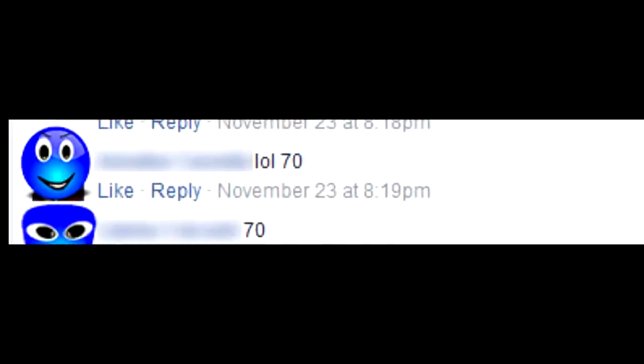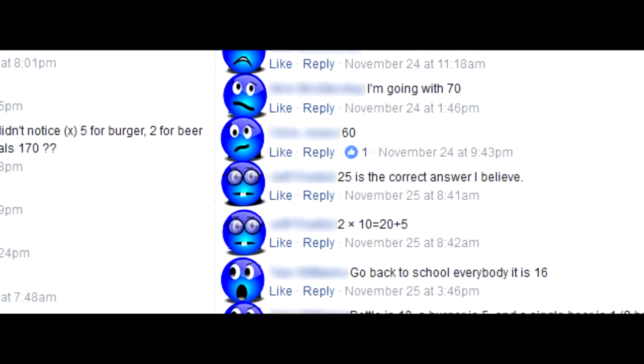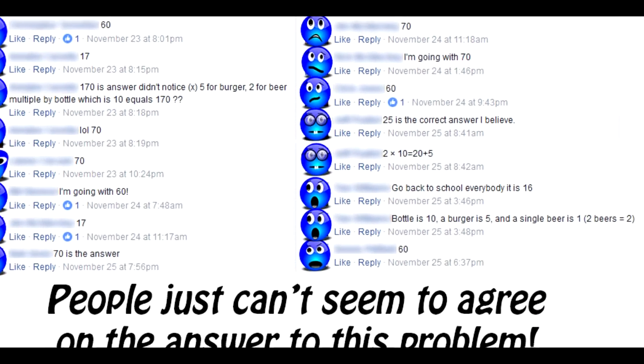So, the people who thought the answer was seventy probably just didn't notice the single beer mug, and they didn't use the order of operations. Their calculation was five plus two is seven times ten is seventy, but that's wrong.